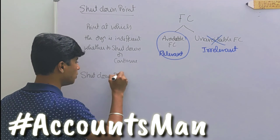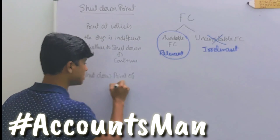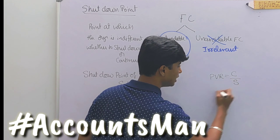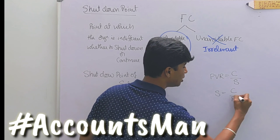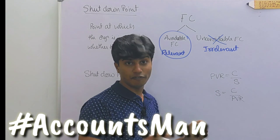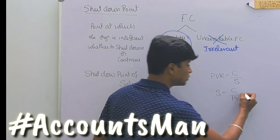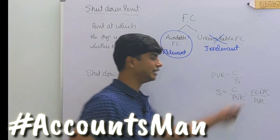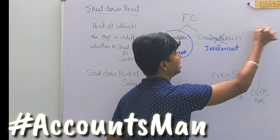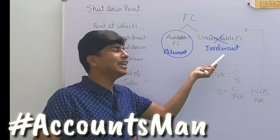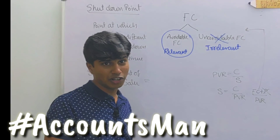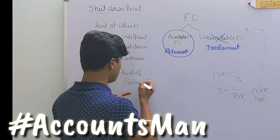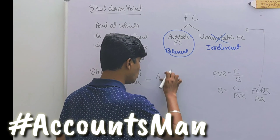To compute shutdown point of sales: our usual sales formula derived from the PVR formula is sales = contribution / PVR. At the shutdown level, there is no profit, so contribution consists only of fixed cost. Fixed cost has two components — avoidable and unavoidable — and since unavoidable fixed cost is not relevant for decision making, at the shutdown point of sales the formula is: avoidable fixed cost divided by profit volume ratio.